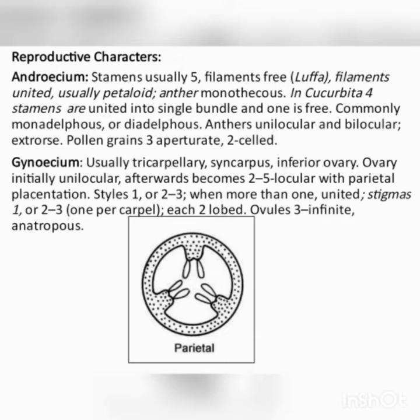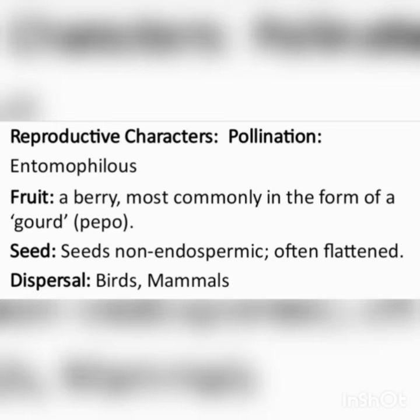Reproductive characters. Coming to androecium: stamens are usually five, filaments are free or united, usually petaloid, anthers monothecous. In Cucurbita, four stamens are united into a single bundle and one is free, commonly monadelphous or diadelphous. Anthers unilocular and bilocular; pollen grains are three-aperturate, two-celled. Gynoecium: usually tricarpellary, syncarpous, inferior ovary. Ovary initially unilocular, afterwards becomes two to five locular with parietal placentation. Styles one, two, or three; when more than one, united stigmas are one, two, or three, and two or three lobed.